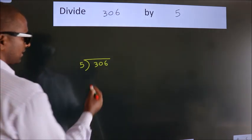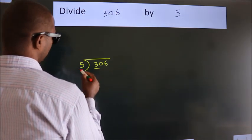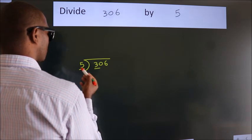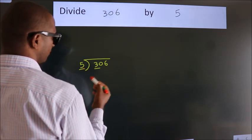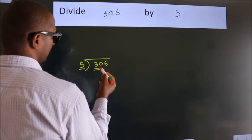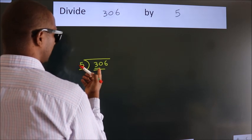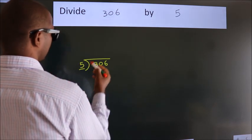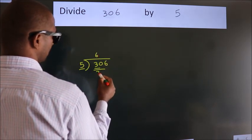Next, we have 3 here and 5 here. 3 is smaller than 5, so we should take 2 numbers: 30. When do we get 30? In the 5 table. 5 times 6 is 30.